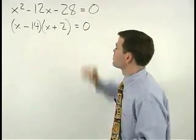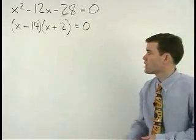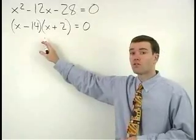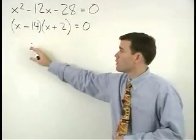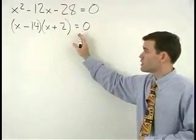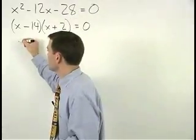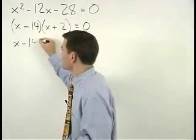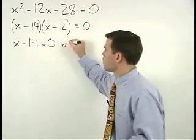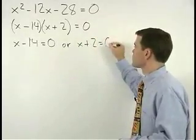And remember it's all set equal to 0. Now we have a situation that's just like our first example. We have two binomials that are multiplying together to equal 0. So either x minus 14 equals 0 or x plus 2 equals 0.